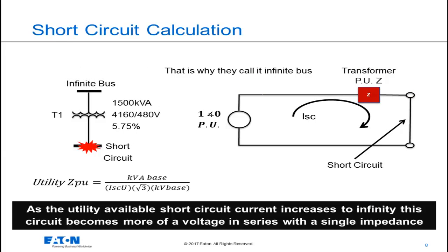As the utility fault current gets larger and the impedance approaches 0, I'm removing it from my circuit. This is why they call it an infinite bus.